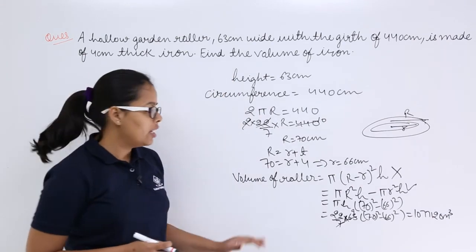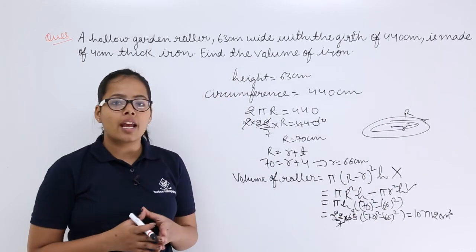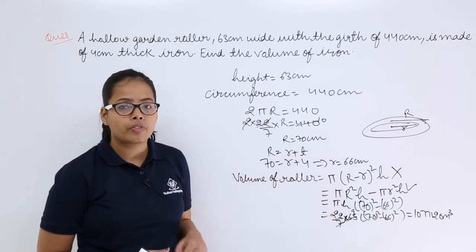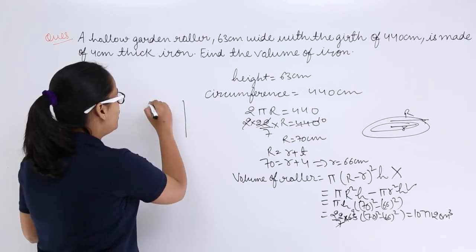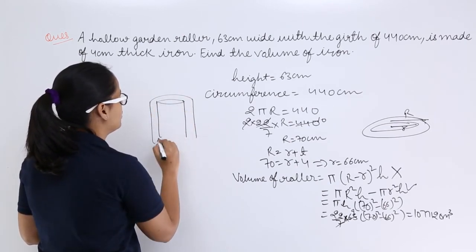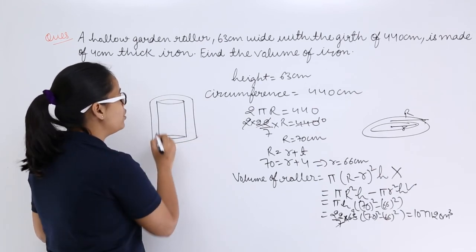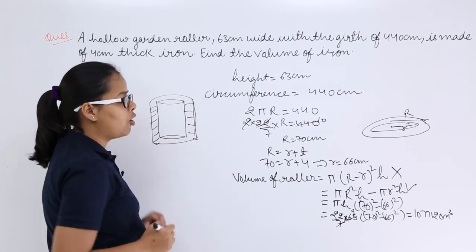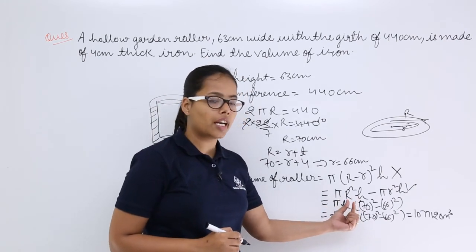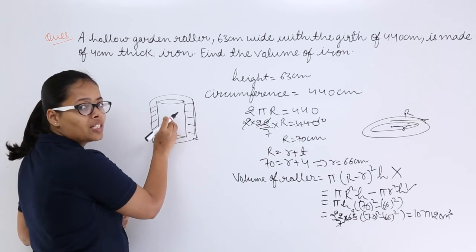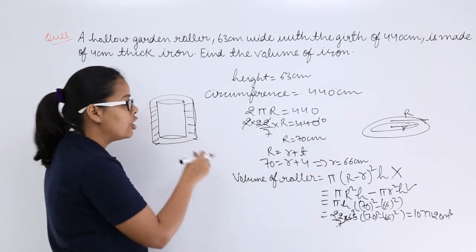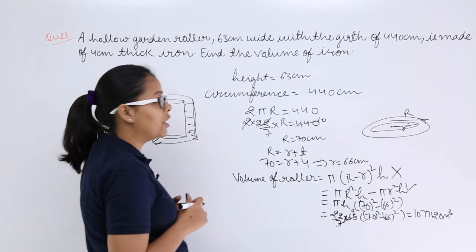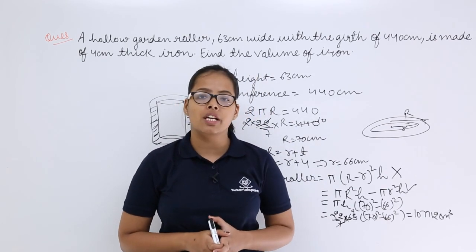I hope there is no doubt. I explained this step so you know which method is right — either using (R minus r) squared or using π R squared h minus π r squared h. Since the hollow cylinder has an outer and inner circle, you calculate the volume of the bigger external cylinder and subtract the volume of the inner cylinder to get the volume of the thickness part. I'll be taking more problems in the coming video lectures. Thank you.